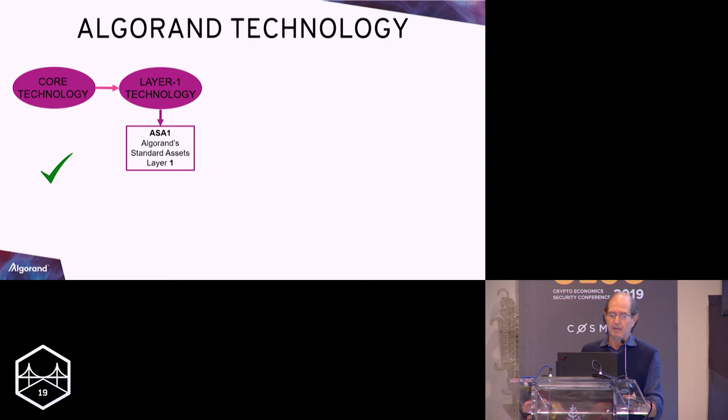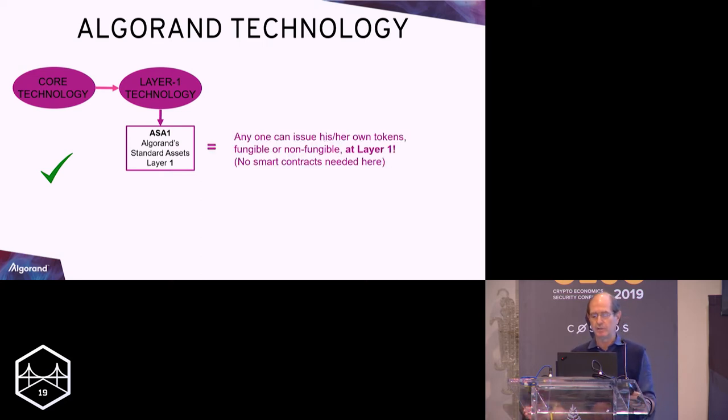Coming now, layer one technology. What is this? This is somehow the ability to issue your own token at layer one. In Ethereum for instance you do that as a smart contract. And you know what smart contract is about? It's about expense, slowness, and error prone, and so on and so forth. Layer one is the same security layer than the consensus protocol. So it's much easier. Anyone can issue their own token, fungible or non-fungible, without need of smart contracts.